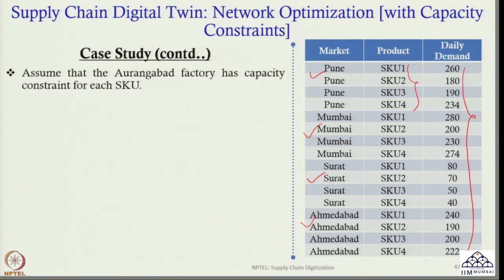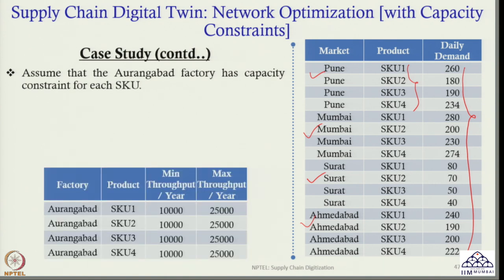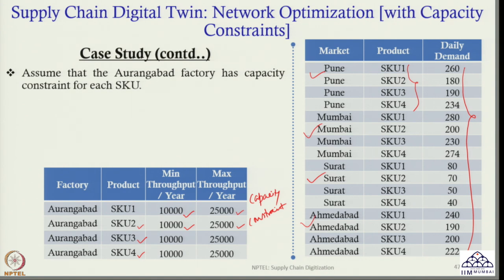This is the new thing — the capacity constraint. The Orangabad factory has a capacity constraint: for SKU 1, minimum throughput per year is 10,000 and maximum throughput per year is 25,000. Similarly, for SKU 2, minimum throughput is 10,000 and maximum is 25,000. The same applies for SKU 3 and SKU 4. Nasik factory does not have any capacity constraint. Distribution centers also do not have capacity constraints. We are putting a capacity constraint only in the Orangabad factory just to see how the results will change.